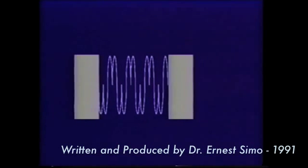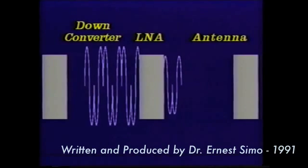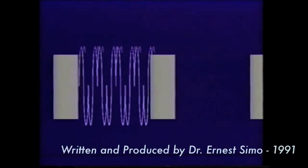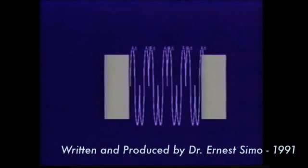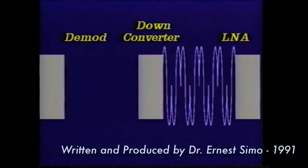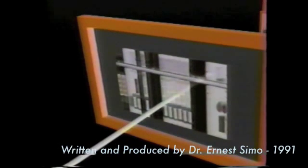The LNA (low noise amplifier) amplifies the signal it receives from the waveguide while introducing a minimal noise level. Although the incoming signal has been focused by the antenna, the signal is quite weak and must be boosted in power prior to the down conversion process. The down converter essentially reverses the function performed by the up converter, and its output is fed into the demodulator section of the modem.